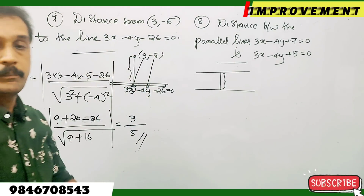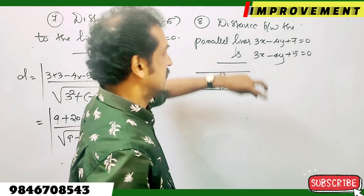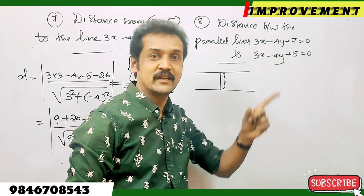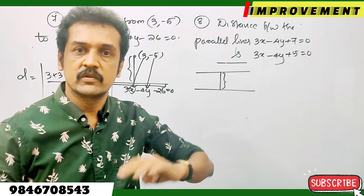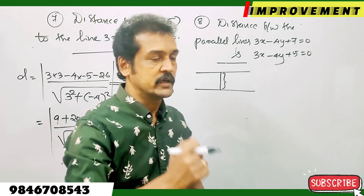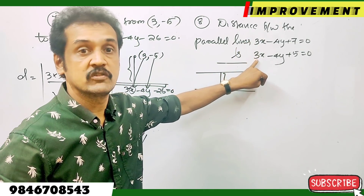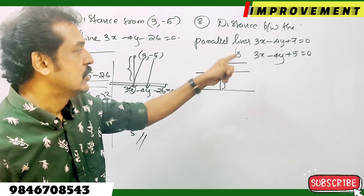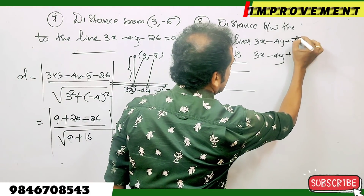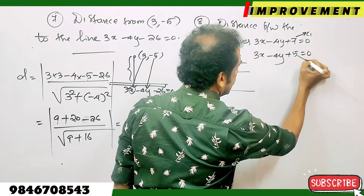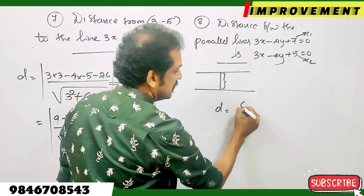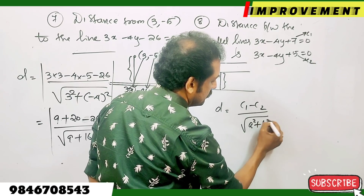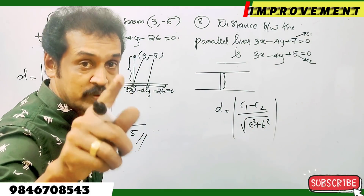Next, we have two parallel lines: 3x minus 4y and another with 3x minus 4y. The distance formula between two parallel lines is C1 minus C2 divided by the square root of a squared plus b squared. This is the formula for finding the distance between two parallel lines.